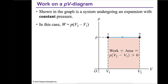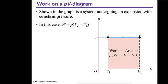In a special case where pressure p is constant, the integral simplifies. If p is constant and the volume changes from V₁ to V₂, the work becomes simply p times (V₂ − V₁), or p·ΔV.